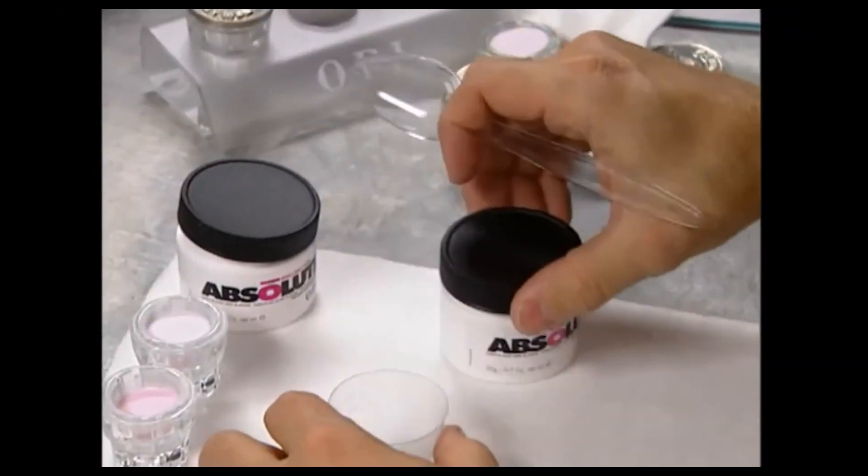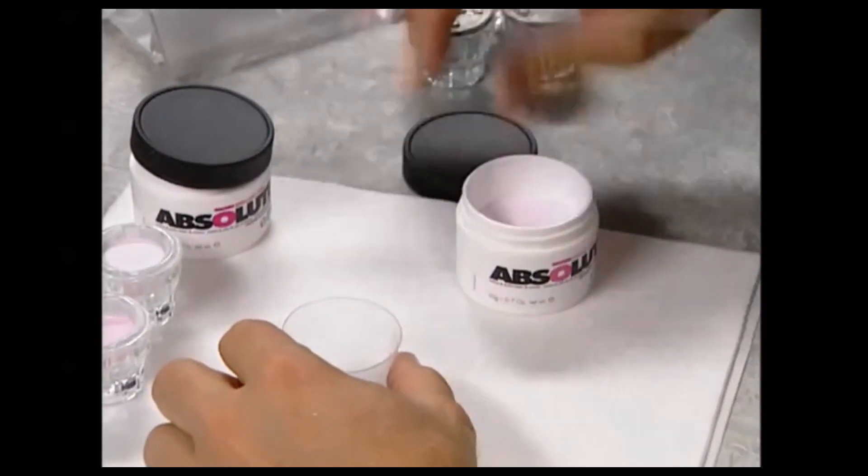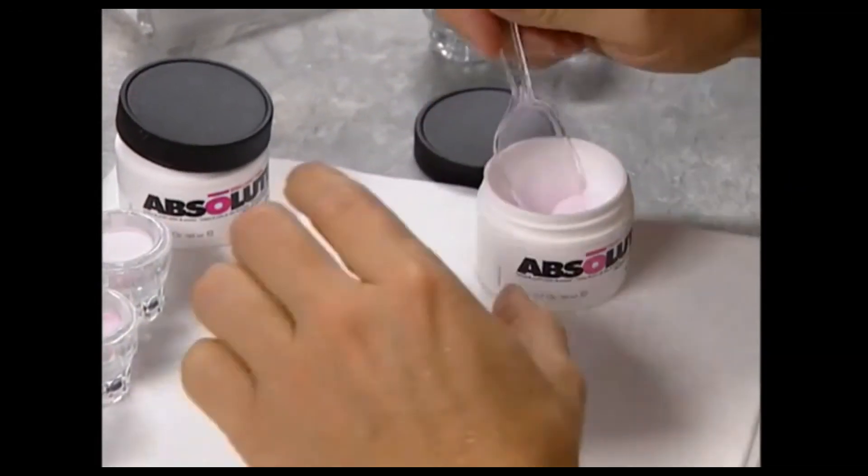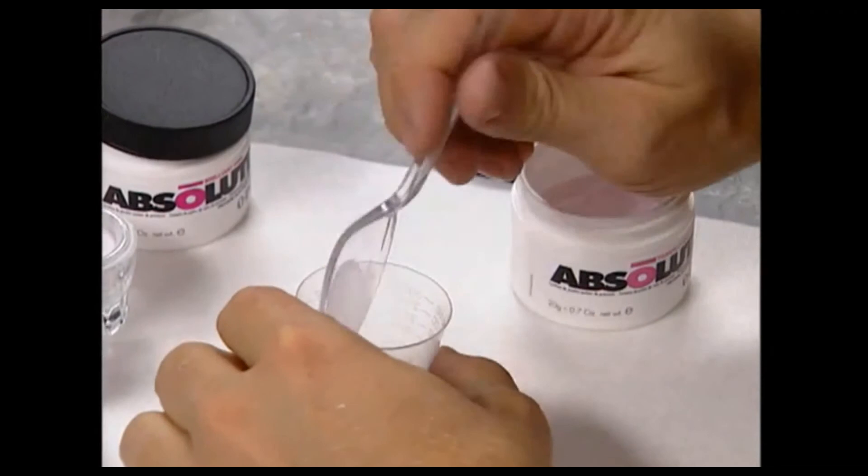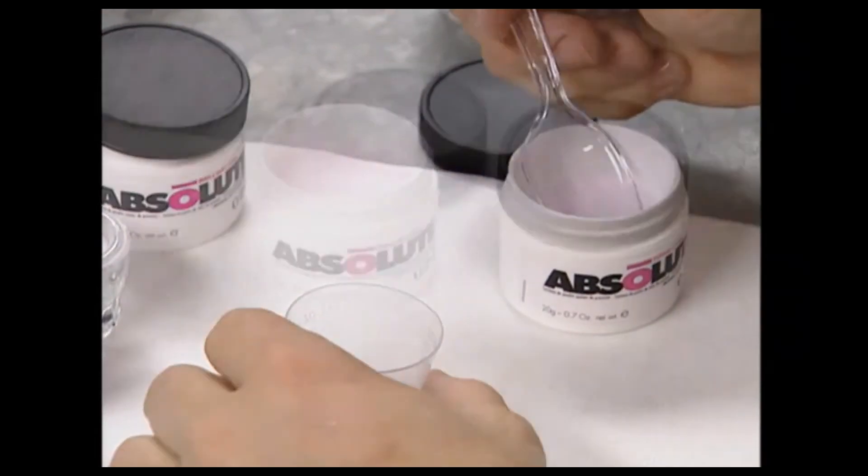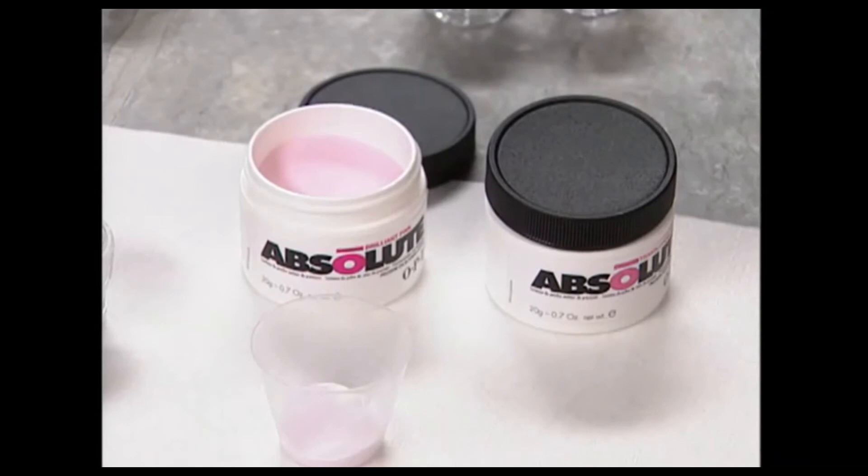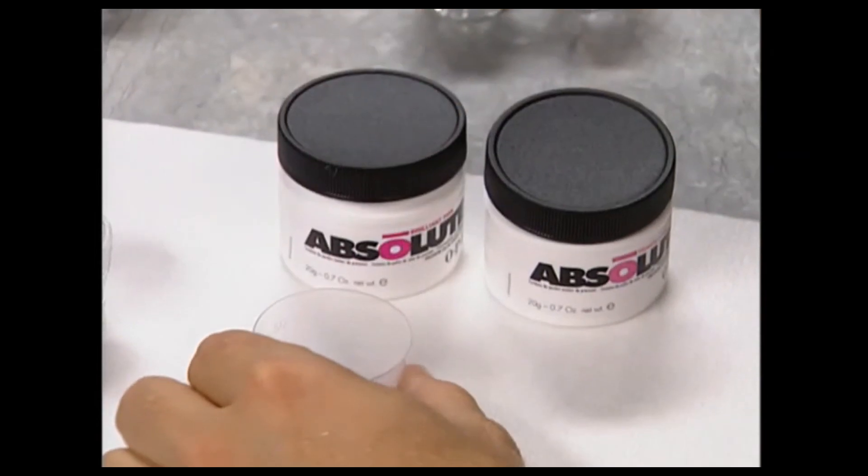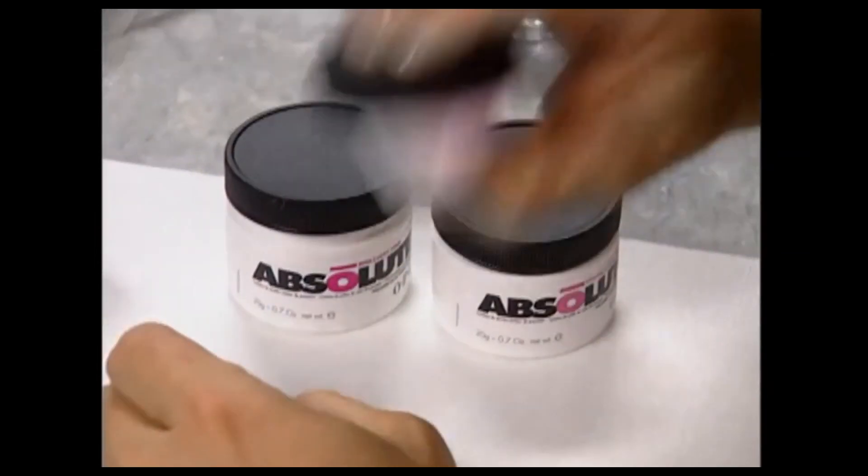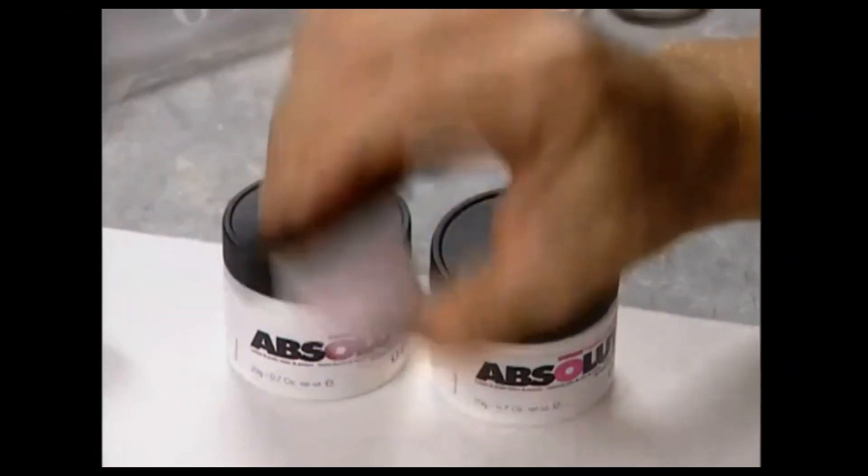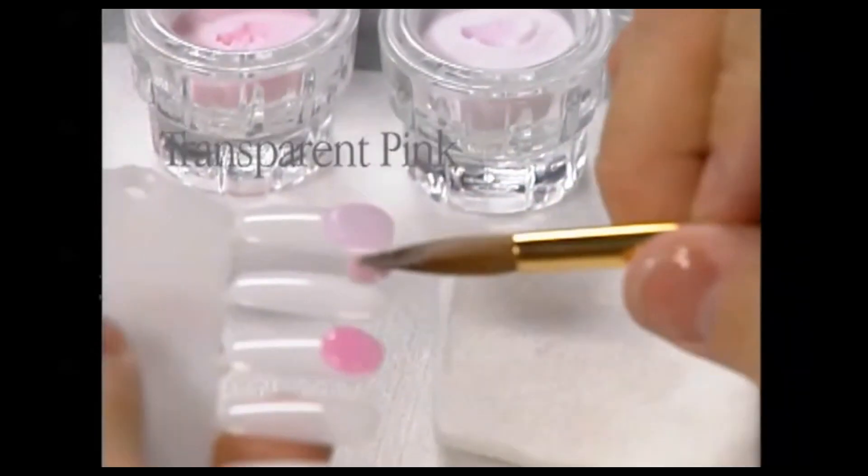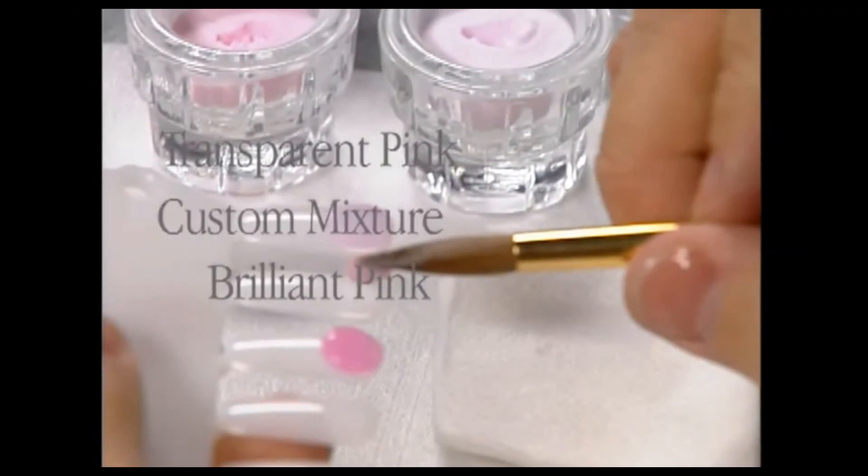To custom blend this pink, place the desired amount of Transparent Pink into a clean container. Add the desired amount of Brilliant Pink and shake the mixture well. You can custom blend any of the Absolute powders to create unique looks for your clients. Shown here is a bead of Transparent Pink, a bead of Brilliant Pink, and a bead of the resulting custom mixture.